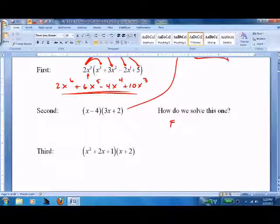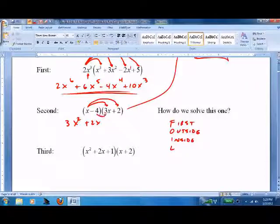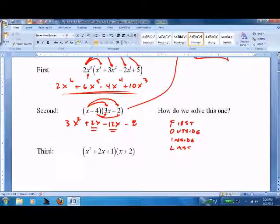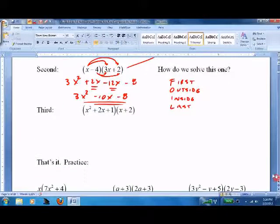This one - a lot of people like to use the word FOIL. I'm not one of those people. I just like distributing it. That means do the first pair: 3 times 1 is 3, x times x is x squared. Do the second pair, the outside ones: x times 2 is 2x. Do the inside ones: minus 12x. And do the last ones. I don't like to use the word FOIL - I think it confuses the issue, makes you think that distribution and FOILing are two different things. But we're not done. We have to combine the like terms: 2x minus 12x is negative 10x minus 8.